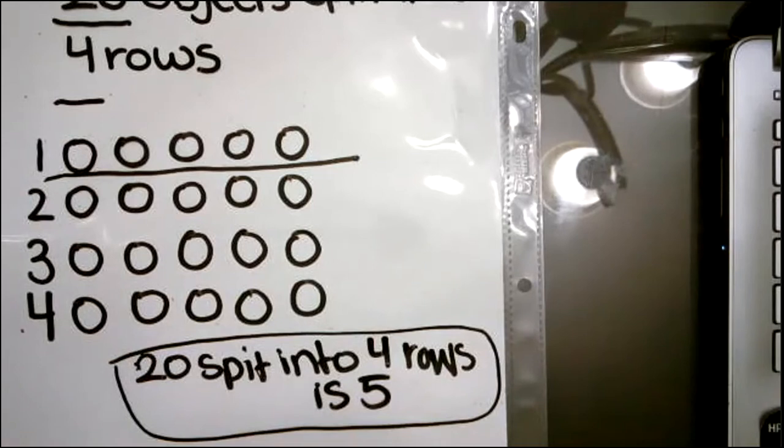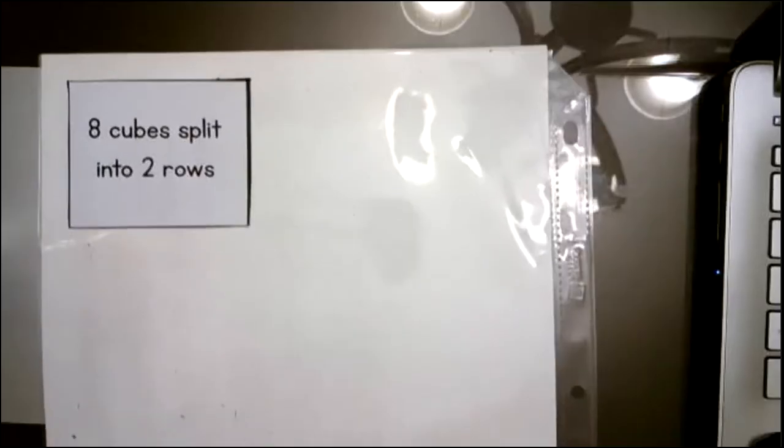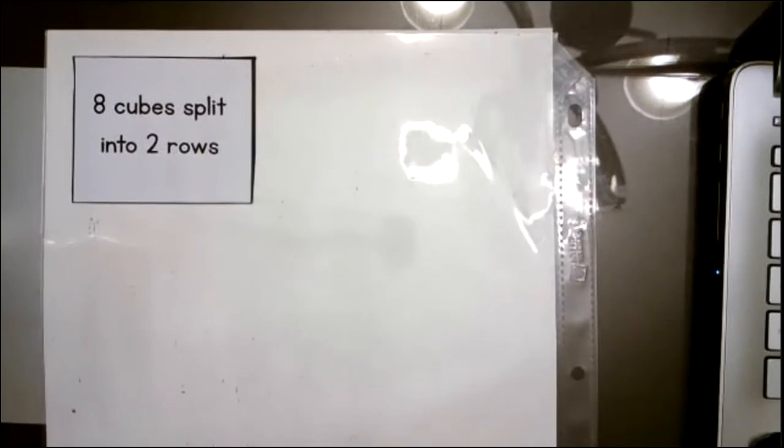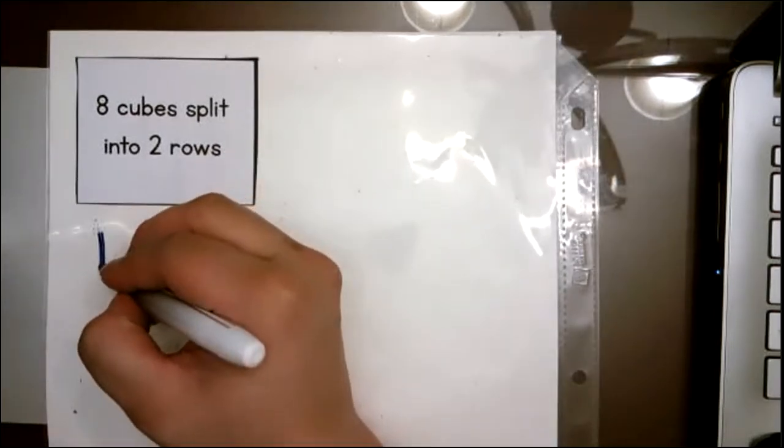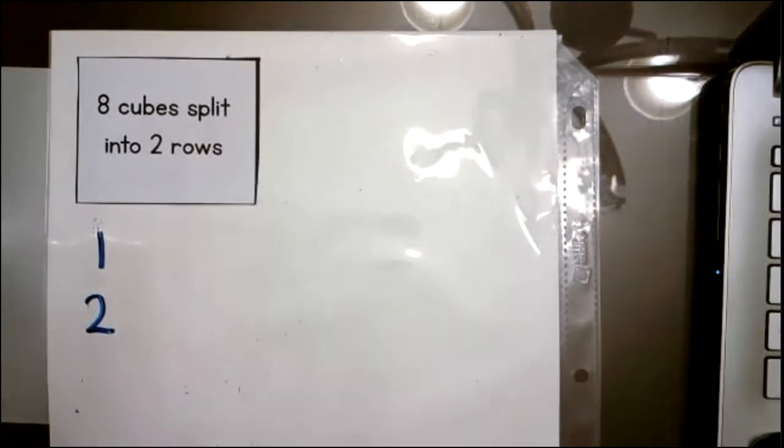All right, friends, now let's do another example. You are doing a fantastic job. So now our next example is eight cubes split into two rows. So the first thing I need to do again is I need to number my rows. So we have two rows. So I have row one and row two.